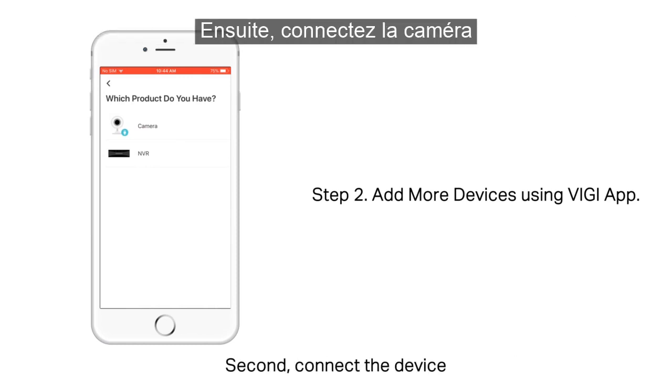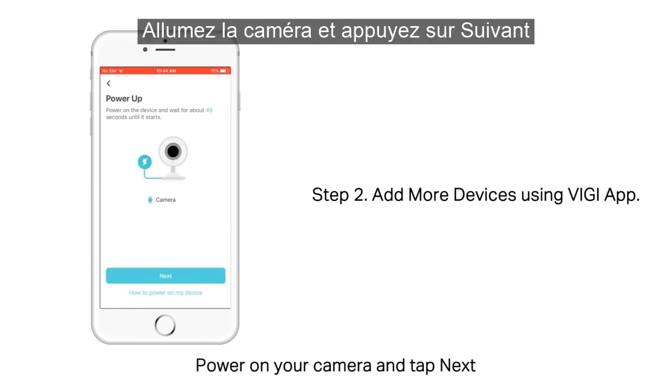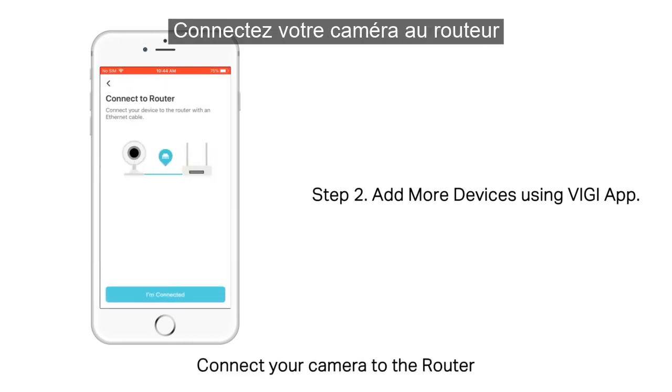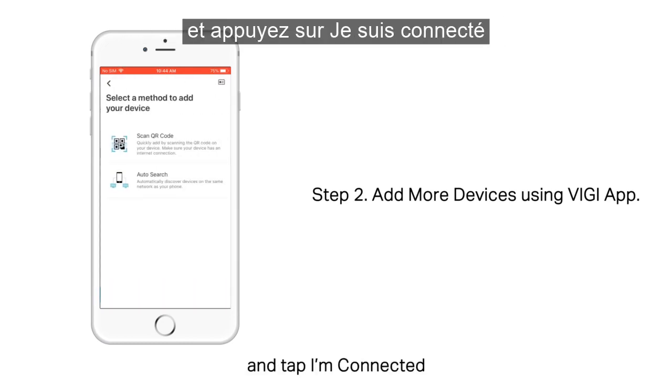Second, connect the device. Power on your camera and tap Next. Connect your camera to the router and tap I'm connected.